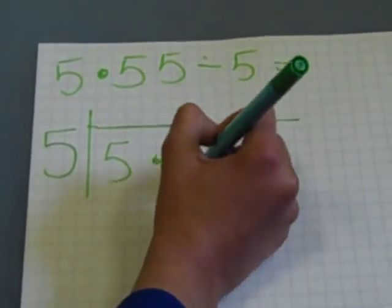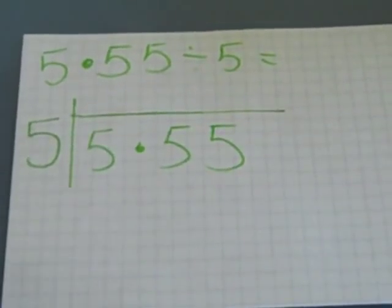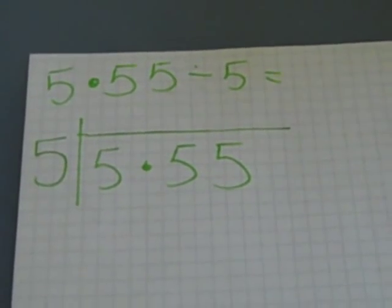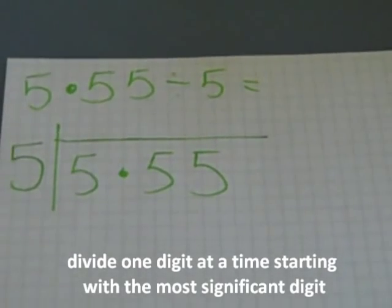Number 5: Divide the divisor by the most significant number and keep going until you get to the least significant number.